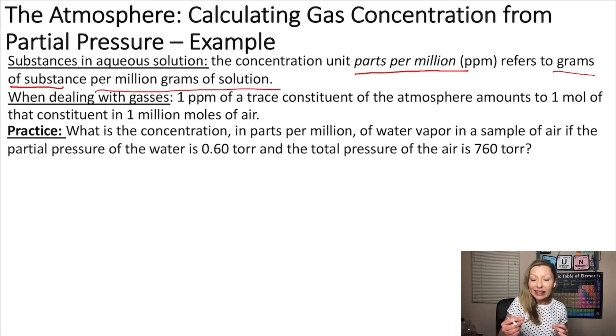When dealing with gases, 1 ppm means we have 1 mole of that constituent in 1 million moles of air. Now let's try to do a practice problem.